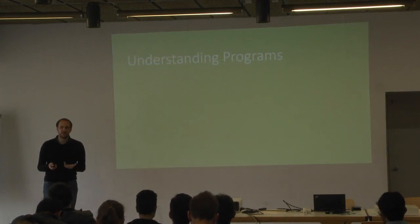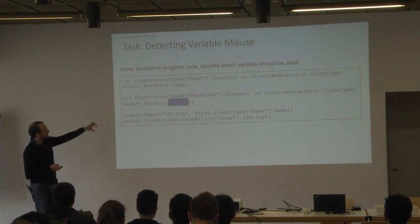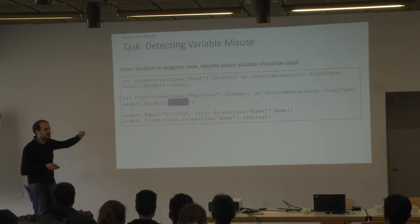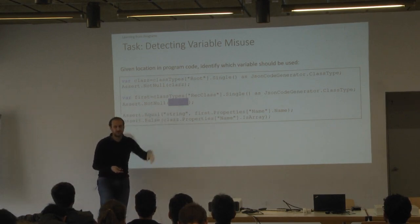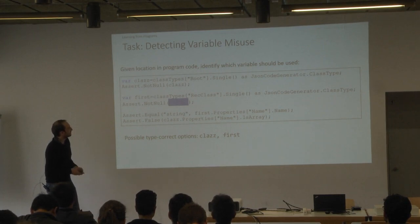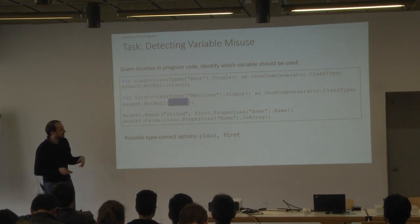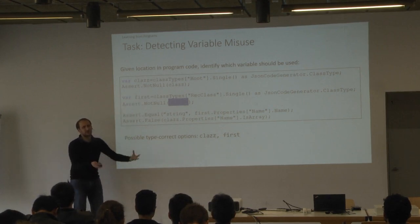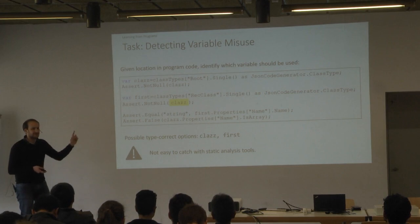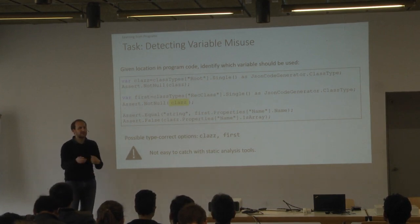How do we actually apply learning to programs? The tasks we looked at: one is detecting a misused variable in a location. You look at a piece of code, blank out one location where a variable was used, and ask which variable should go into this slot? The only type-correct options at this point are 'class' and 'first.' It's obvious — you used 'first' here, it was declared, and you should assert at this point that 'first' is not null. But it happens that the actual code on GitHub uses the wrong variable. What happened, clearly, is someone copy-pasted code and didn't quite adapt all the uses of these things. It's very hard to find this with classical static analysis, because 'first' is not unused — it appears elsewhere.